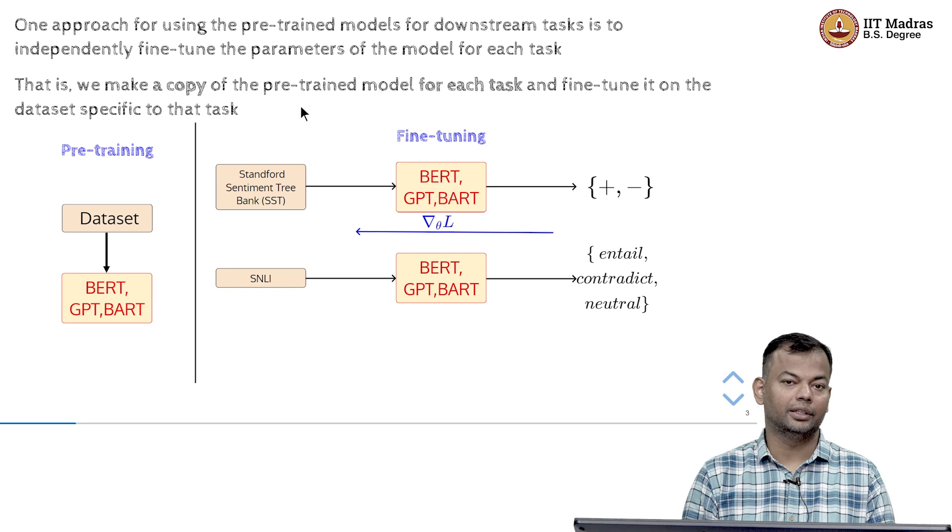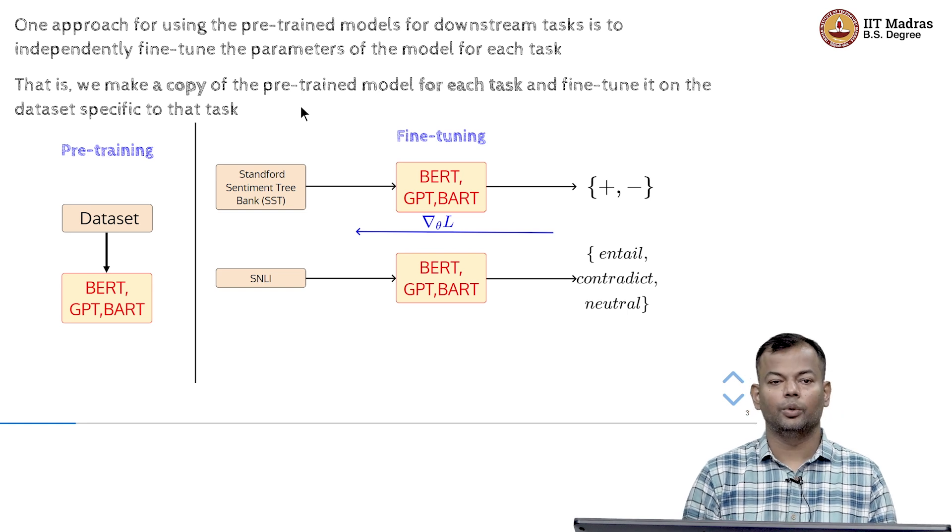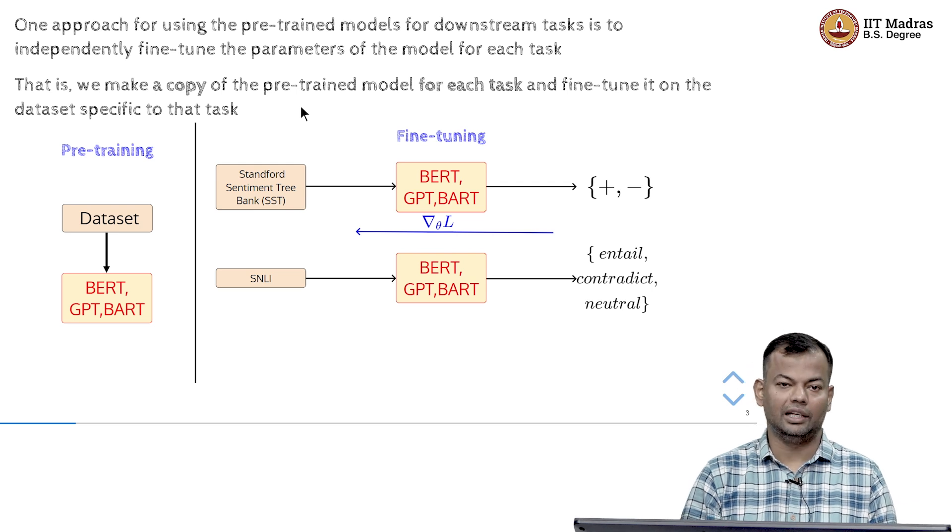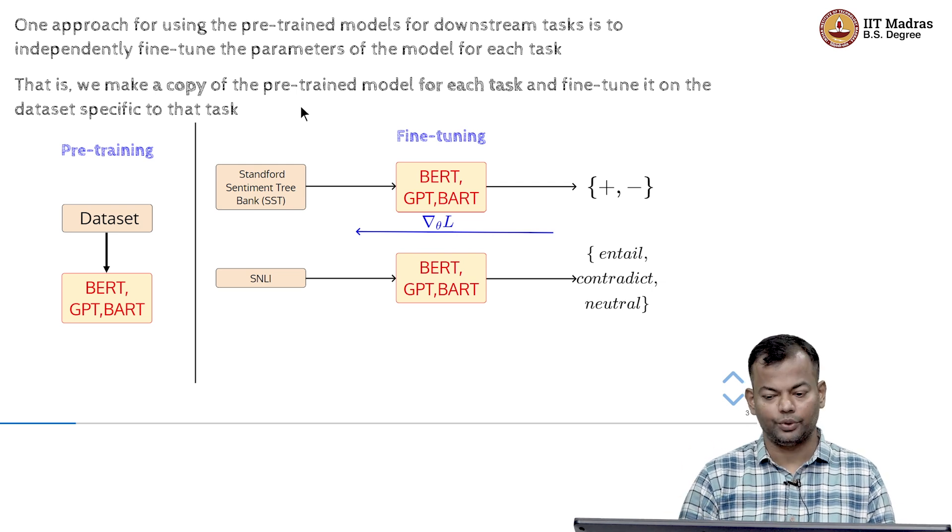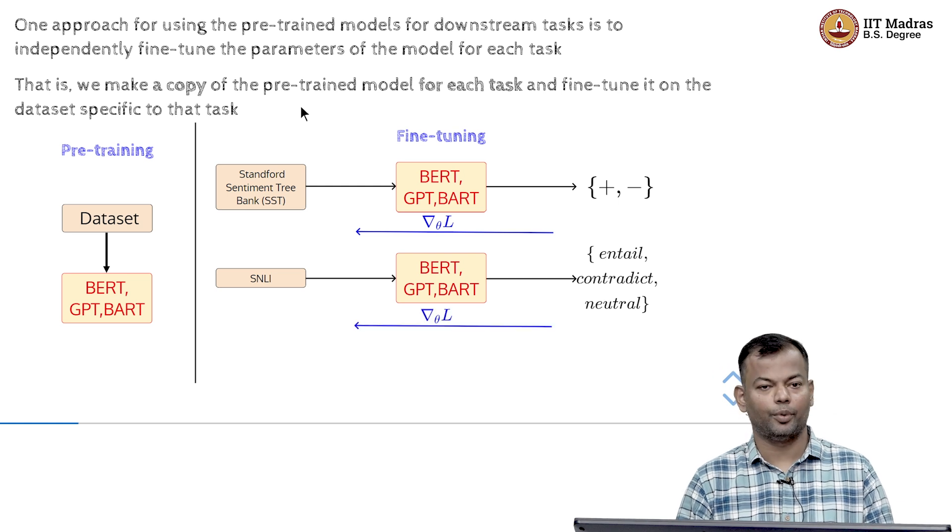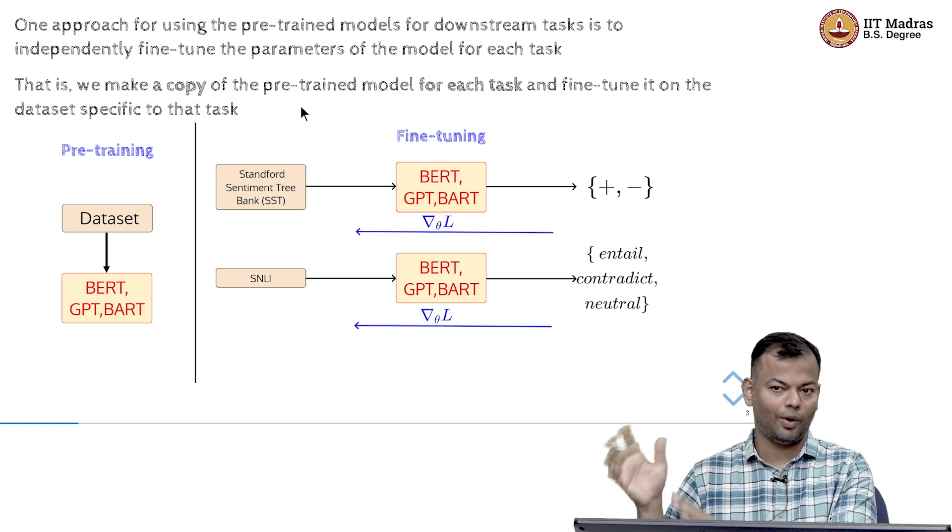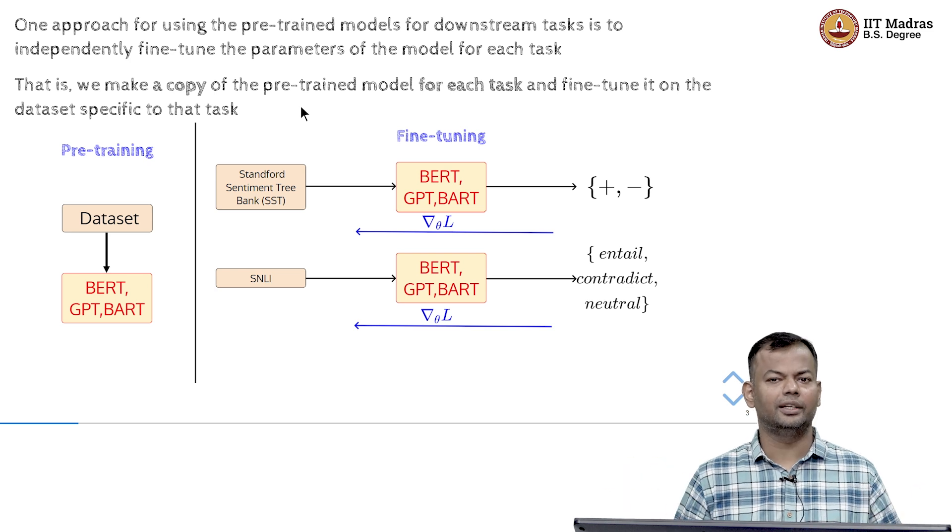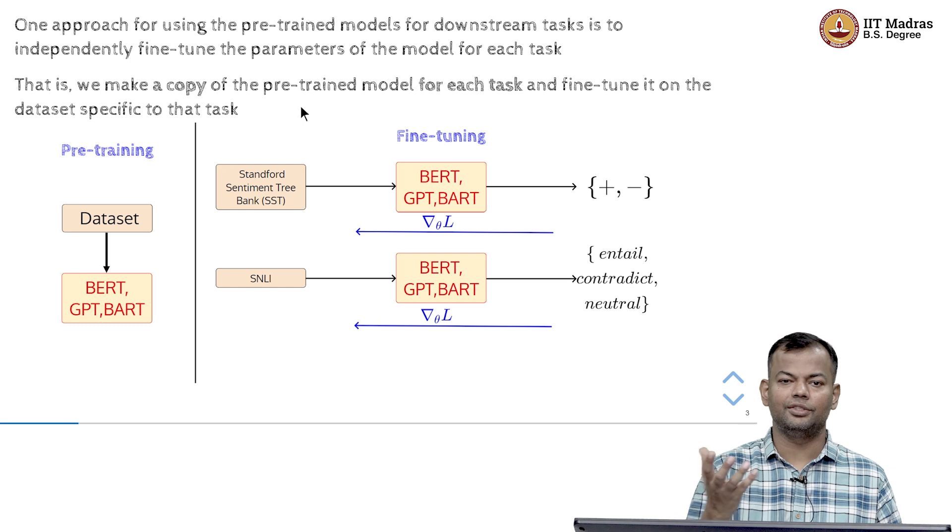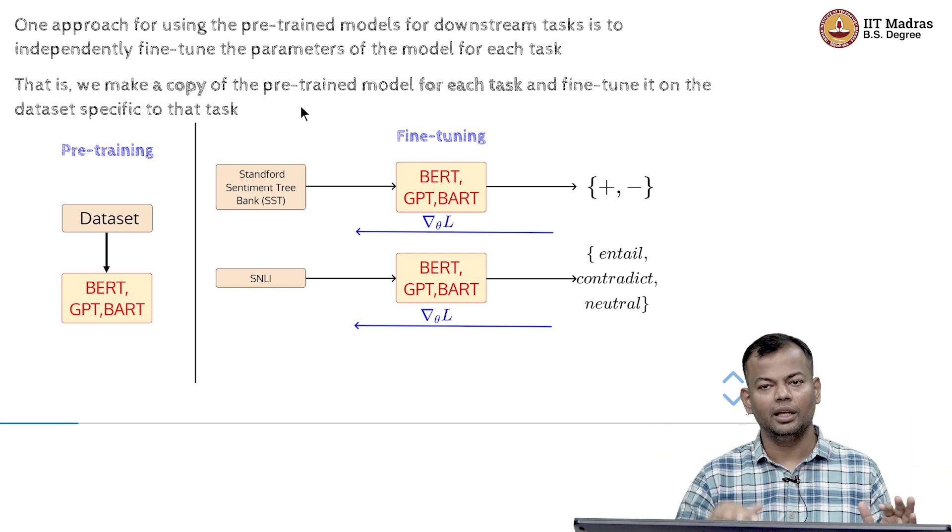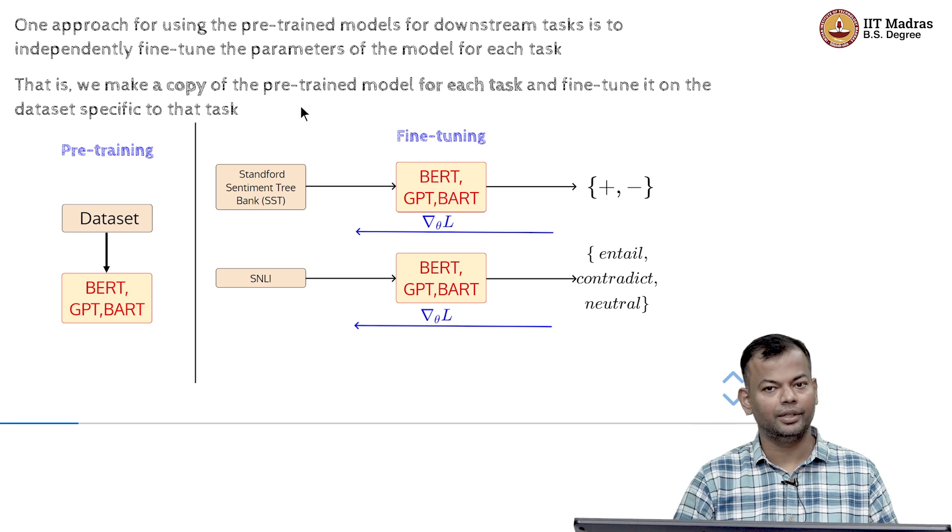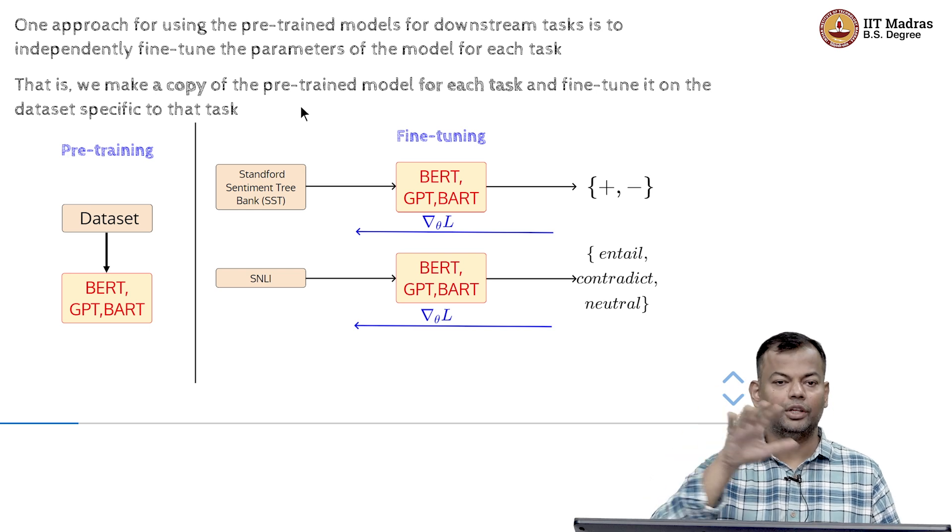Or you could take the SNLI task where you want to predict whether sentence one and sentence two have one of these three relationships: entails, contradicts or neutral. Again, you could do the same thing and back propagate. So, you have X as well as Y and now using this, you can treat this as a standard classification task and take the pre-trained model as just like the weights are initialized from pre-training and from that point onwards, you are just fine-tuning the model.